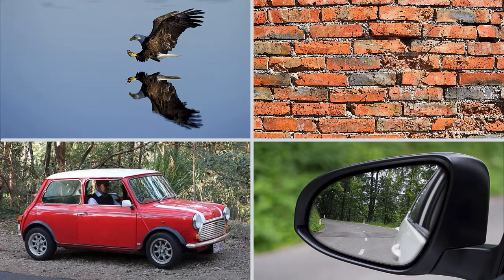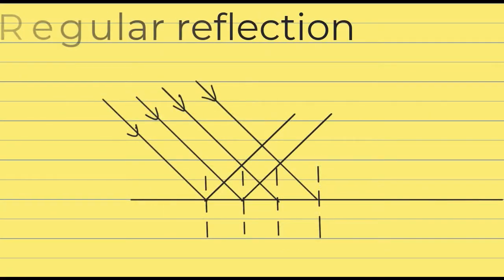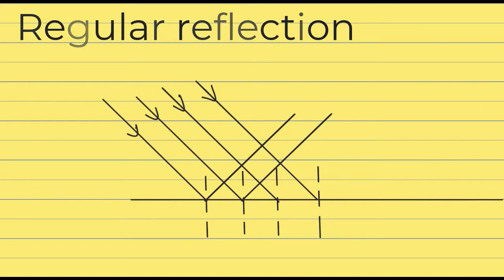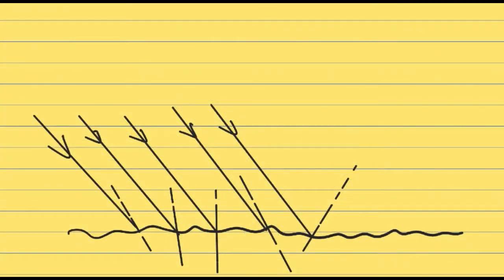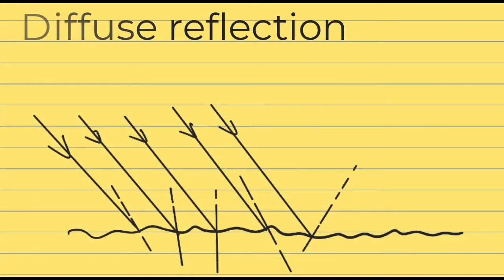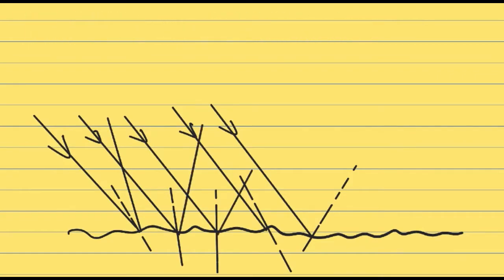Which of these objects reflects light? Well, they all do. The reason we can see anything that doesn't produce its own light is because light reflects off the object into our eyes. Not everything produces an image though. And images are only produced when the surface is very smooth and all of the reflected rays are parallel. Otherwise, on a rough surface, all of the reflected light rays reflect off at different angles. The light is scattered and no image is formed.